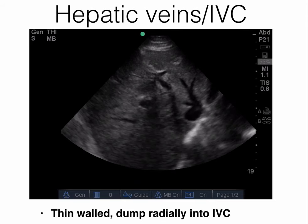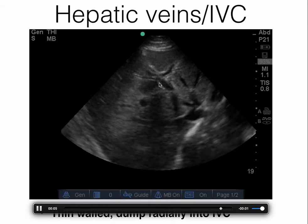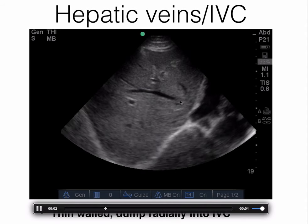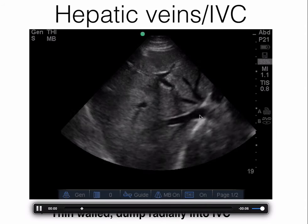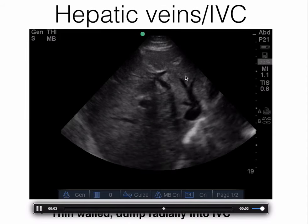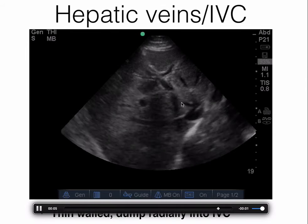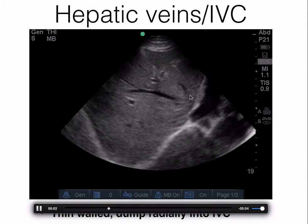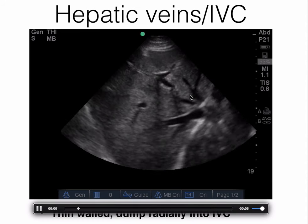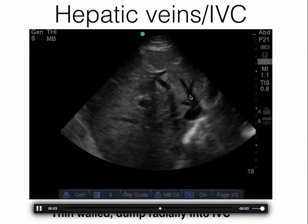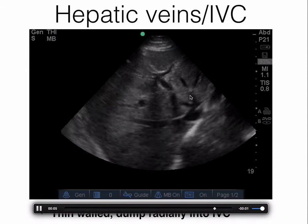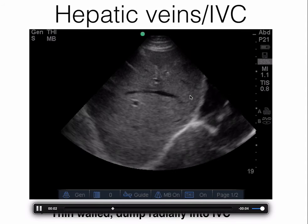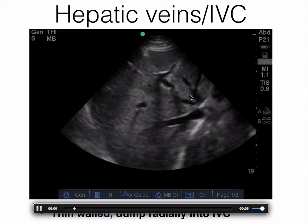Lastly, we'll take a look at the hepatic veins — they are thin-walled structures that descend and drain into the IVC posteriorly in a radial pattern. Sometimes they are dilated beyond a centimeter or so, and if you see that you're looking at probable evidence of reversal of flow, which is common in patients with congestive heart failure as well as pulmonary hypertension.